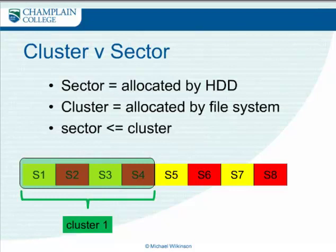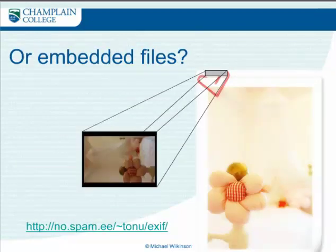I did some work last month on four-sector hard drives and got a few questions on the difference between clusters and sectors. The cluster is allocated by the file system and sits on top of the sectors. Sectors are allocated by the physical device. So when we're carving and looking for the header at the start of a JPEG, that should be on the cluster boundary — you're not going to find a header in the middle of a sector. We can improve the performance of our carving by only looking at the first bytes at the start of each cluster rather than searching through every single byte.